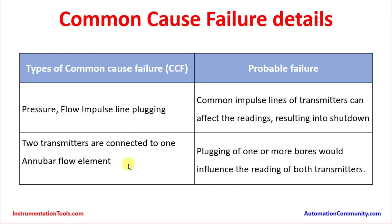When two transmitters are connected to one Annubar flow element — a type of flow measurement device — plugging of one or more internal bores will influence the readings on both transmitters. So if there is plugging on one bore, it may impact the readings on the second transmitter as well.